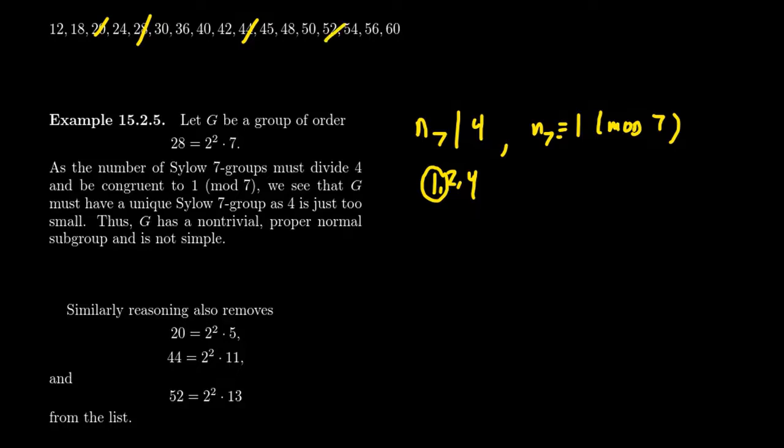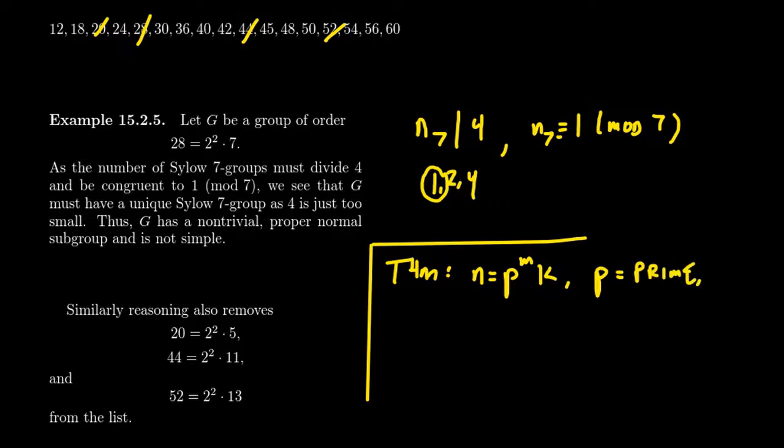So I'm going to leave it as an exercise to the viewer to prove the following statement, a theorem. Imagine that n is a number that factors as p to the m times a number k, where p is prime. And we have that k is actually smaller than the prime itself. So in that situation, I would then leave it to the viewer to prove...